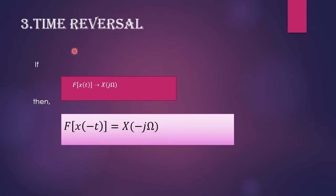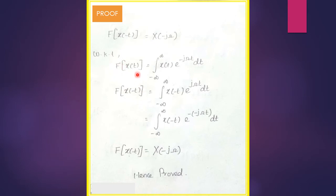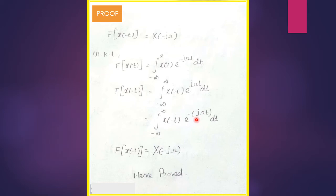The next property is time reversal. Time reversal means the Fourier transform of x(−t) equals X(−jω). We know the Fourier transform of x(t) is ∫x(t)·e^{-jωt} dt. For x(−t), the exponential term e^{jωt} can be written as e^{-(-jω)t}, which gives X(−jω). This property is proven.